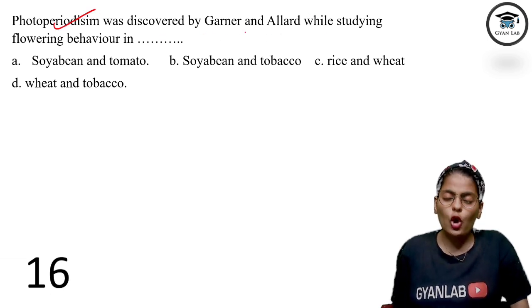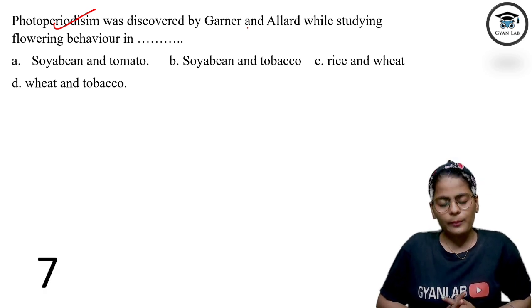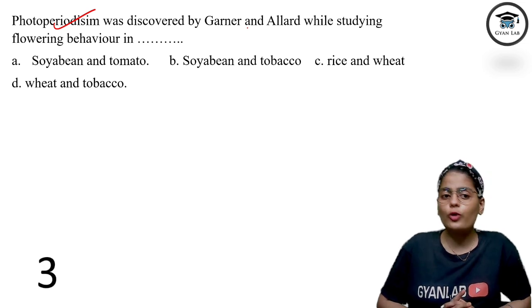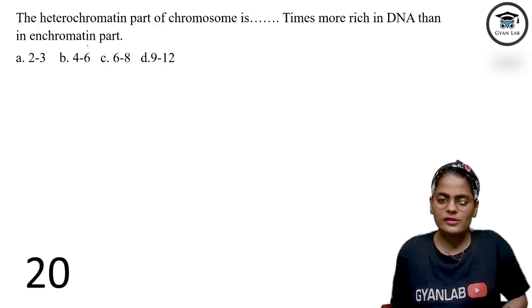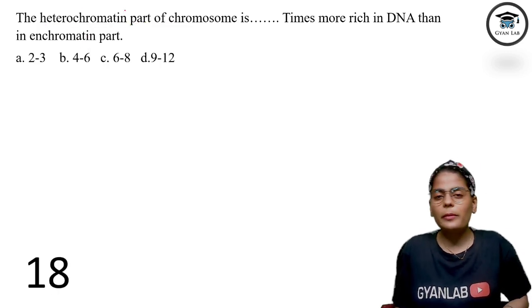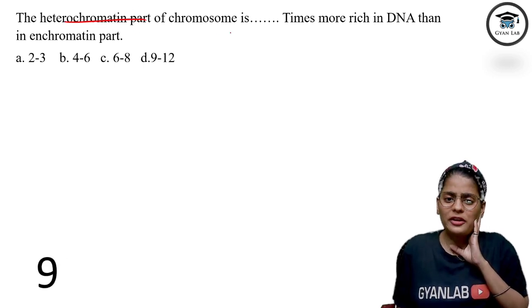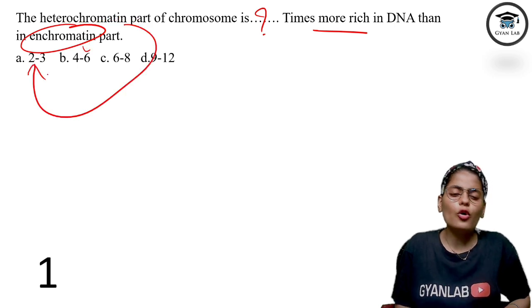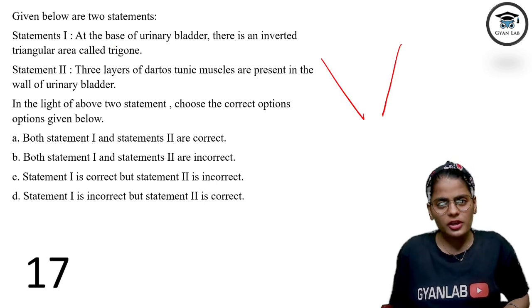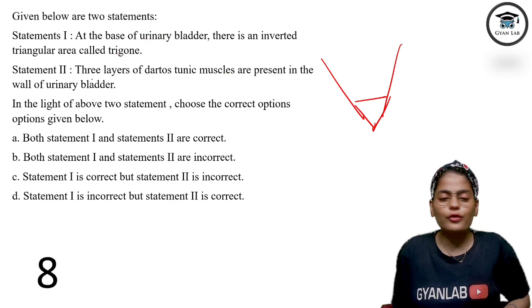Photoperiodism — Garner and Allard were the scientists who discovered photoperiodism by studying soybean and tobacco plants, relating to how much light a plant needs to flower, from Chapter 7. Regarding heterochromatin: euchromatin is active DNA, heterochromatin is condensed or inactive DNA. As per the textbook, heterochromatin has two to three times more DNA than euchromatin. For the urinary bladder question, the trigone is the base part, and three layers of detrusor muscles are present in the wall — but the option stating two layers is incorrect. Option 1 is correct.